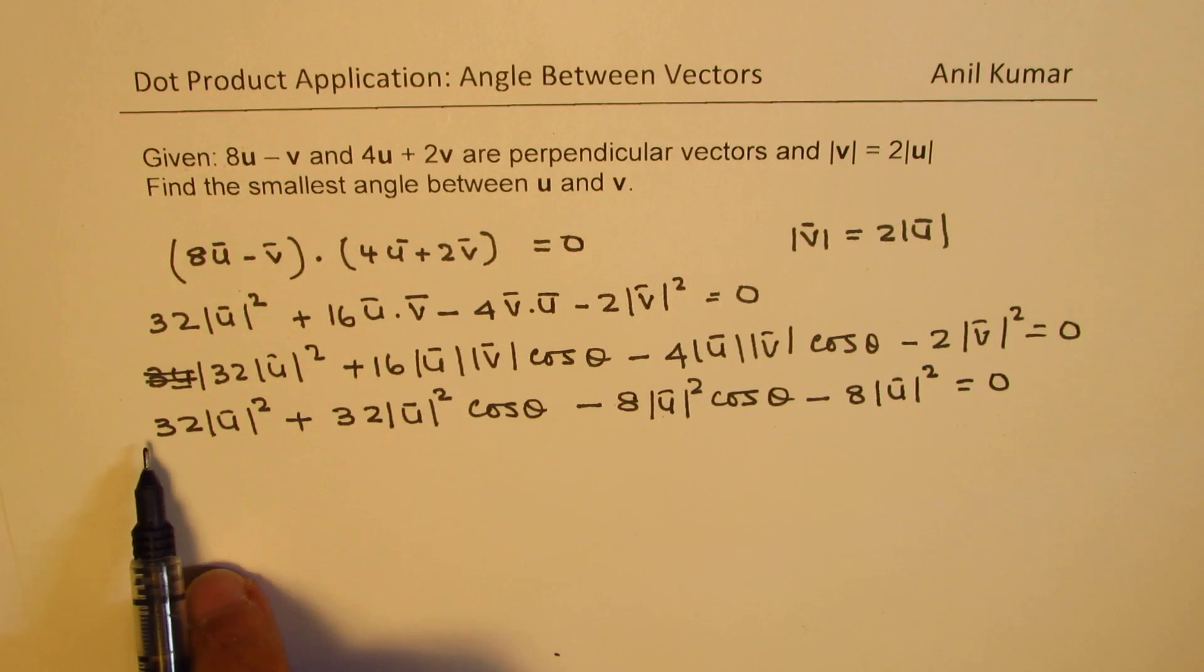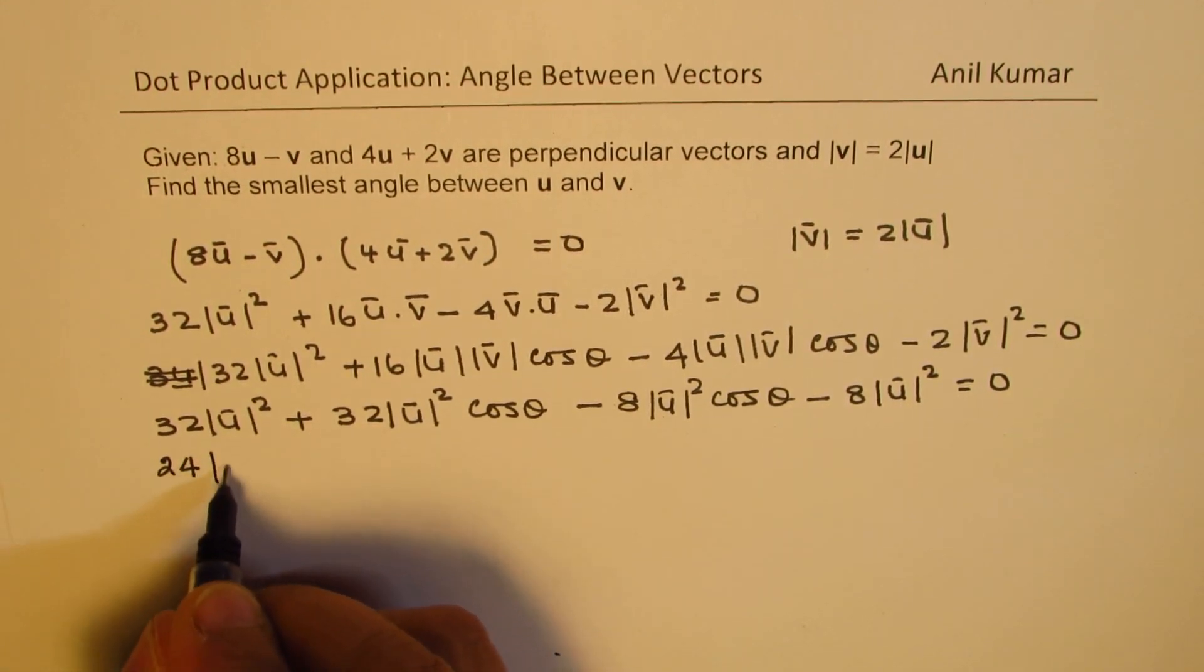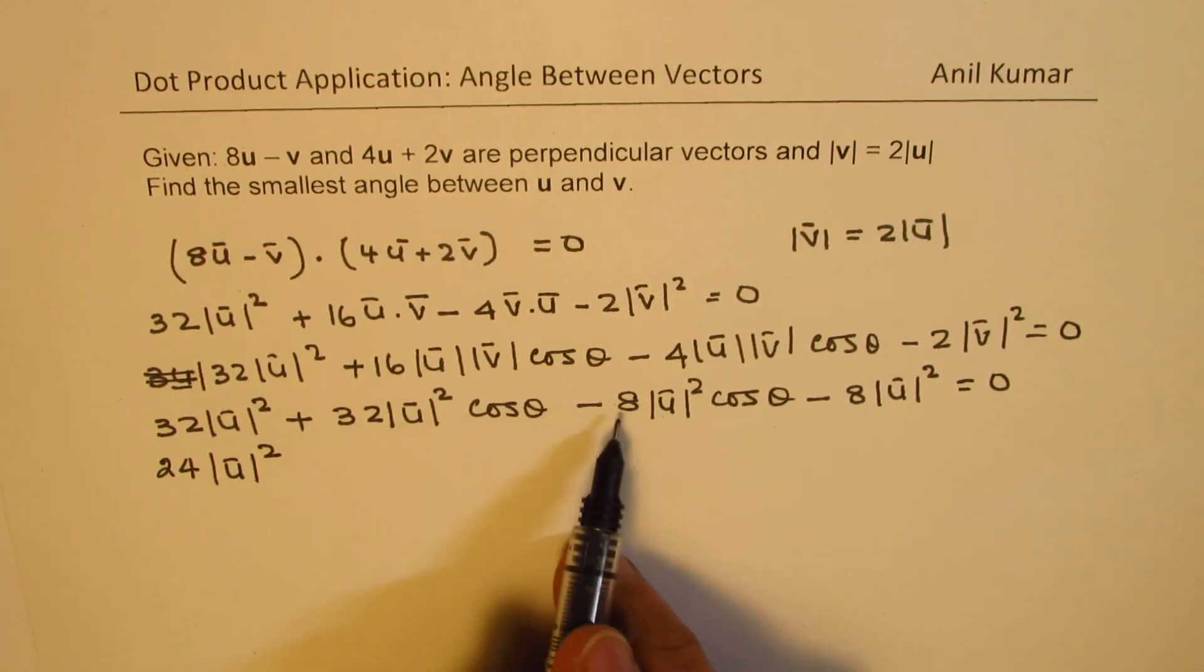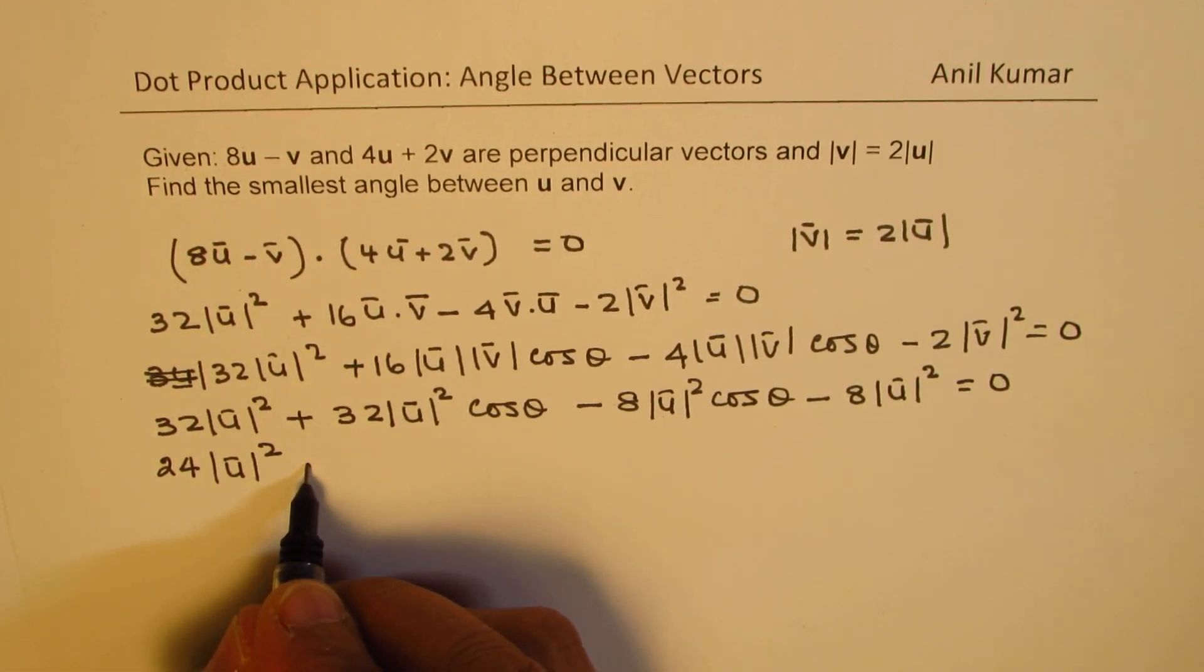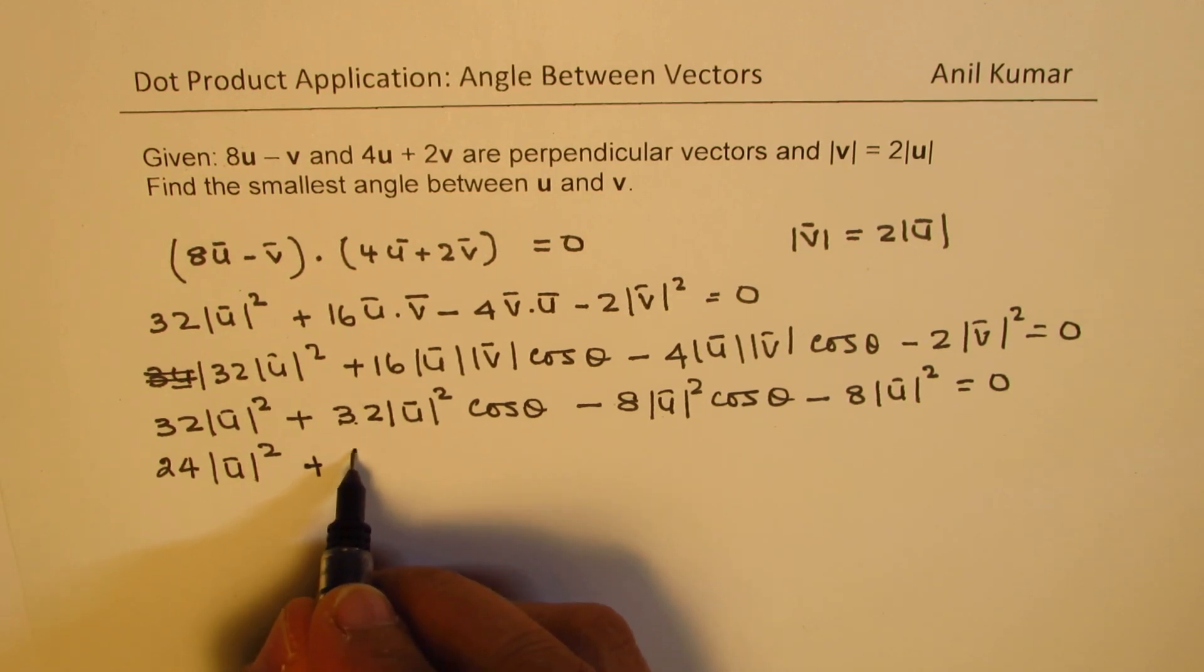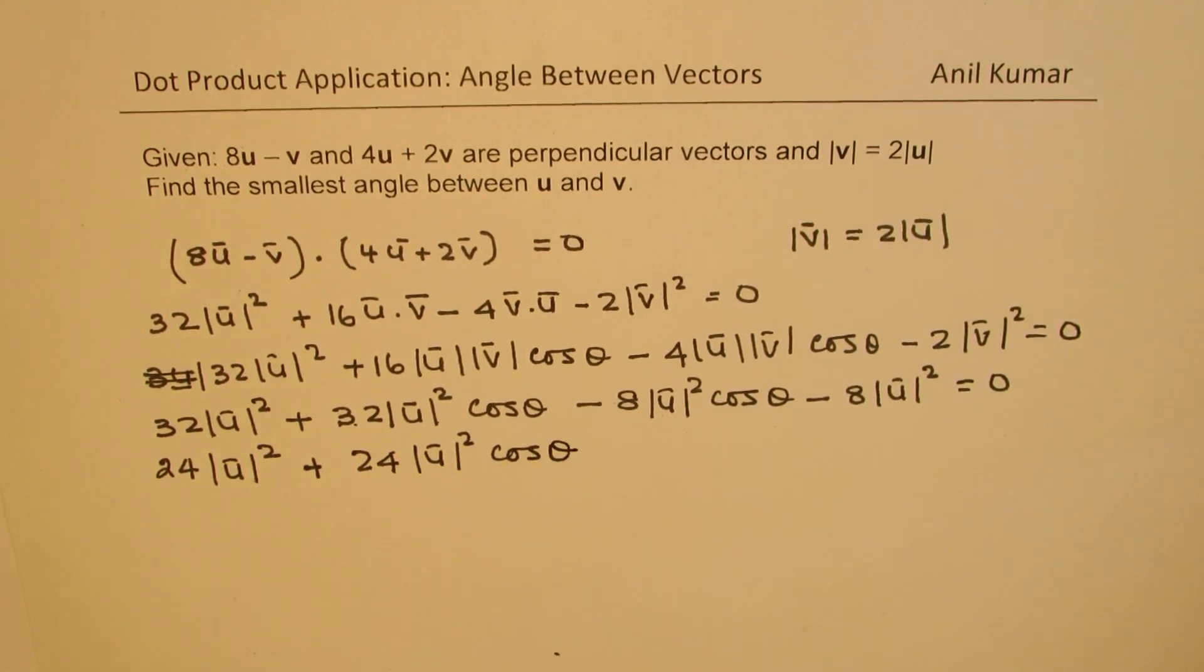Now let's combine the like terms. We have 32 u squared and 8 u squared, that gives us 24 magnitude of u squared. And the cos theta terms, we have 32 and 8, which when you take away gives us 24 magnitude of u squared cos theta equals zero.